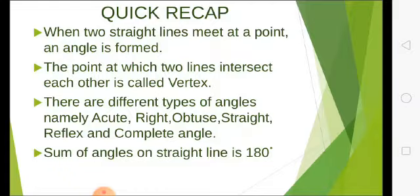In the previous lesson, we learned about when two straight lines meet at a point, an angle is formed. The point at which two lines intersect each other is called the vertex.